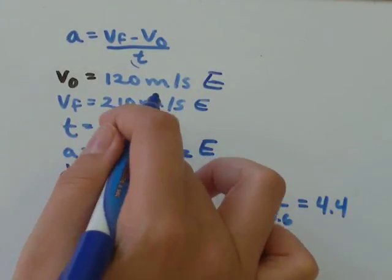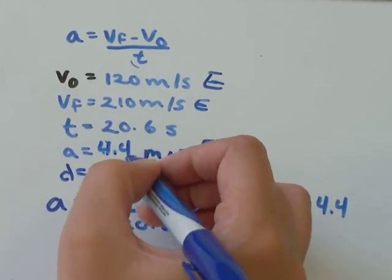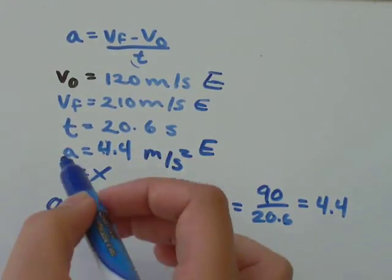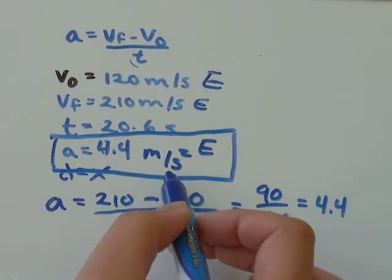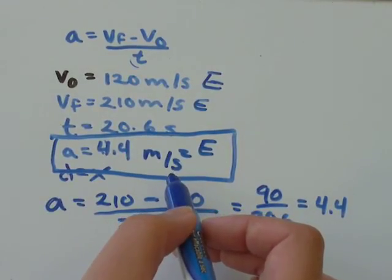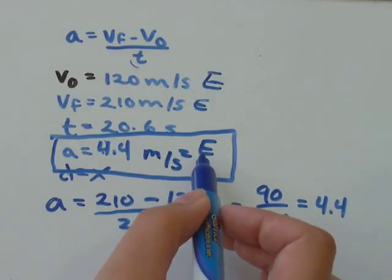4.4 is what's going up here. We've found that our acceleration is 4.4. Don't forget your units, meters per second squared, and don't forget acceleration is a vector, so you need a direction: east.